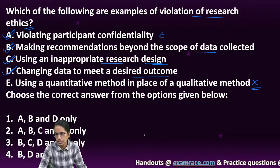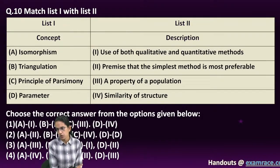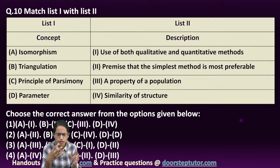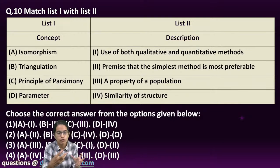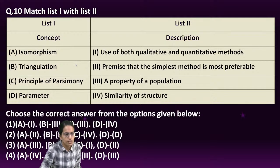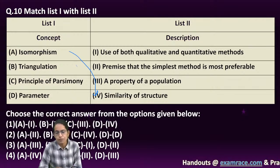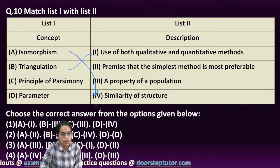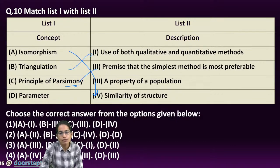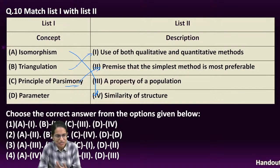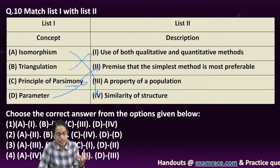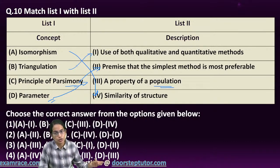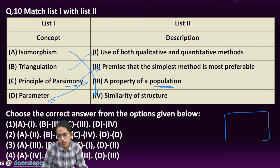The next question covers the concept of isomorphism. Isomorphism, used in algebraic concepts, is about equating parameters and focuses on similarity of structure - so A is similarity of structure. Then triangulation is a method used in both qualitative and quantitative research. The principle of parsimony holds that the simplest method is usually the most preferred. Parameter refers to the property of a population, while statistic refers to the property of a sample.